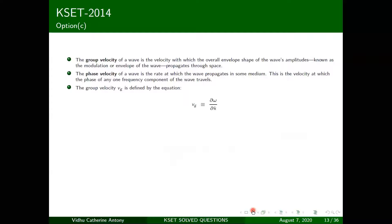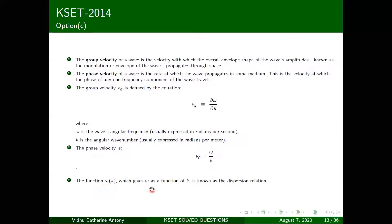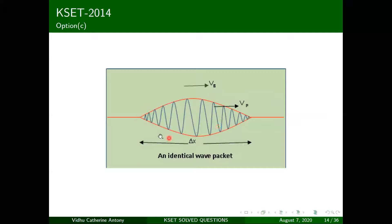The phase velocity is defined as v_p = ω/k — just ω divided by k with no derivative. The group velocity v_g = ∂ω/∂k uses the dispersion relation ω(k). The 'g' in group velocity refers to how the entire wave envelope moves, while v_p refers to the phase of one frequency component.